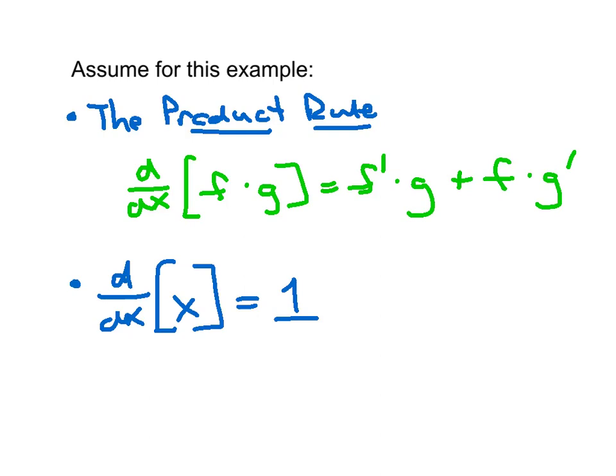Isn't it true that the power rule comes first in the calculus book? That's true, but if you think back to when you learned the product rule, you didn't really need the power rule to prove the product rule — so in fact you could cover the product rule first if you wanted to. We're going to assume the product rule works in this proof, and we're also going to assume that the derivative of x by itself is 1, which is safe to assume for a couple of reasons.